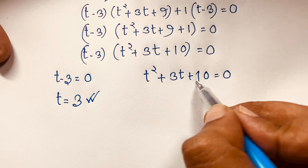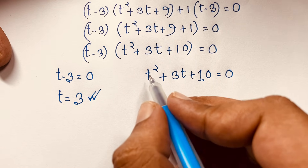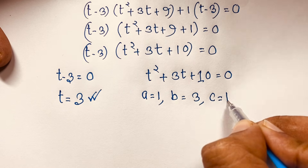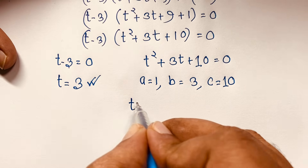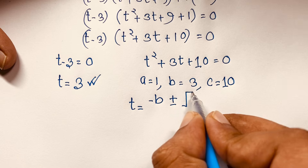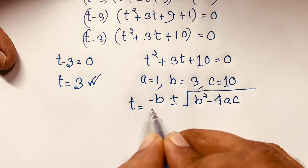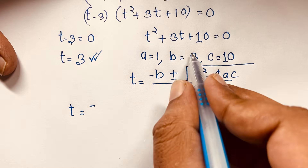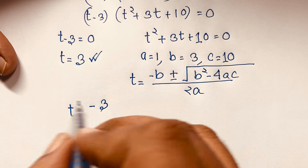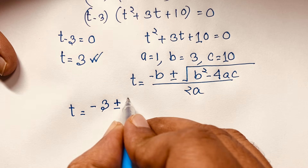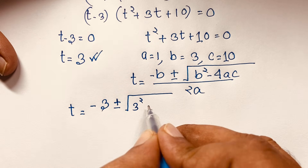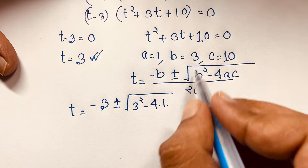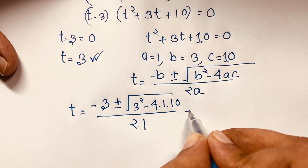But we will also find the other two roots. Let's verify using the quadratic formula. Here a is equal to 1, b is equal to 3, and c is equal to 10. We find two roots using t equals minus b plus or minus square root of b squared minus 4ac, all over 2a. Applying this formula: t equals minus 3 plus or minus square root of 3 squared minus 4 times 1 times 10, over 2 times 1.